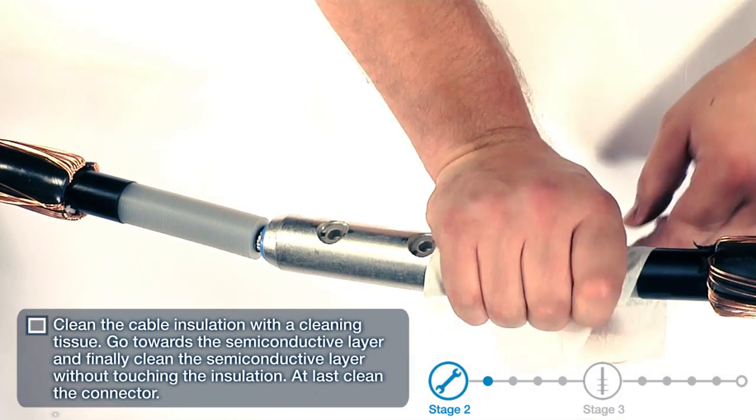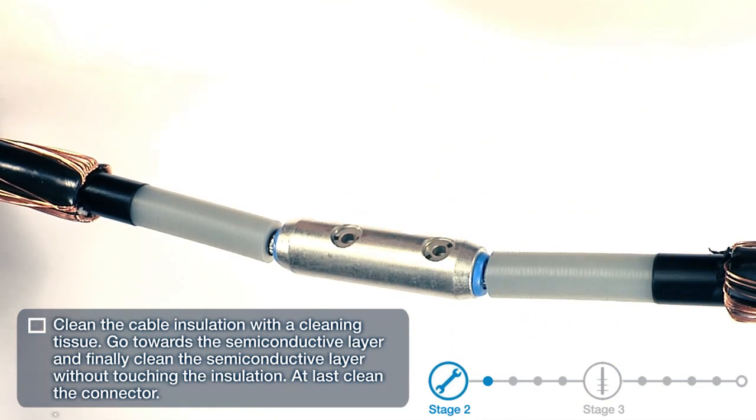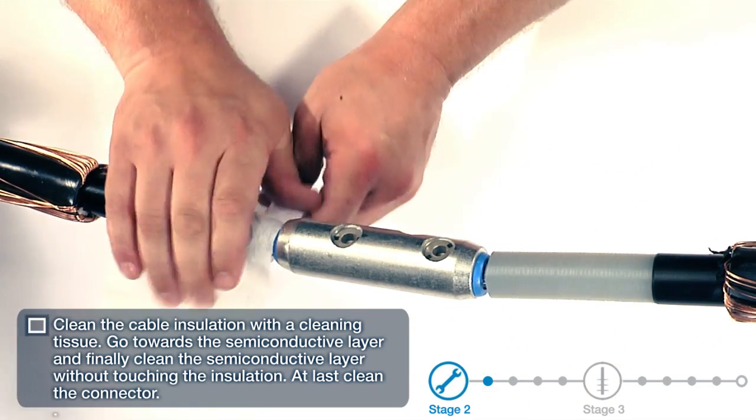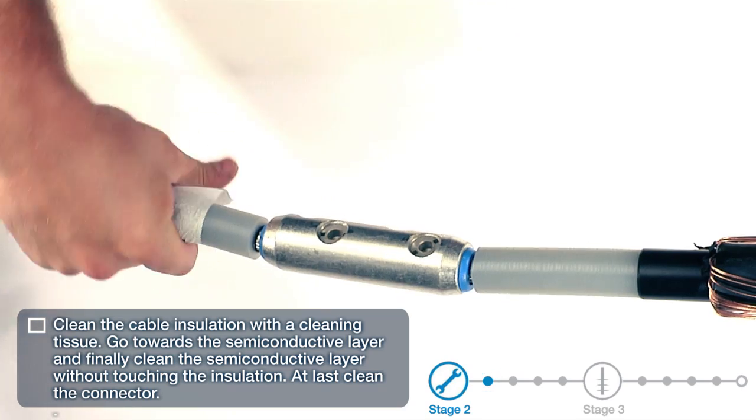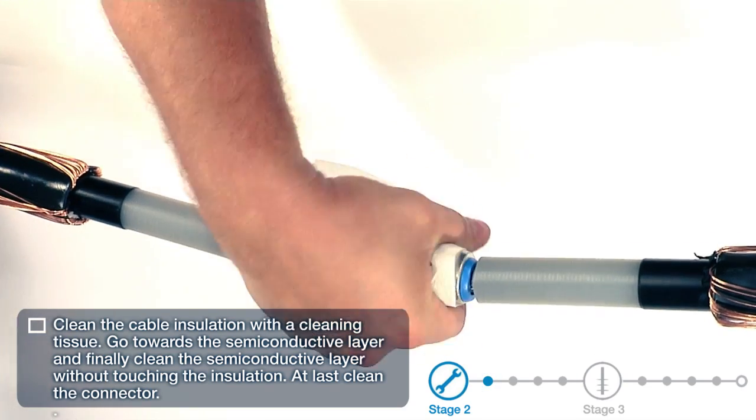Clean the cable insulation with a cleaning tissue. Go towards the semi-conductive layer and finally clean the semi-conductive layer without touching the insulation. Last of all, clean the connector.